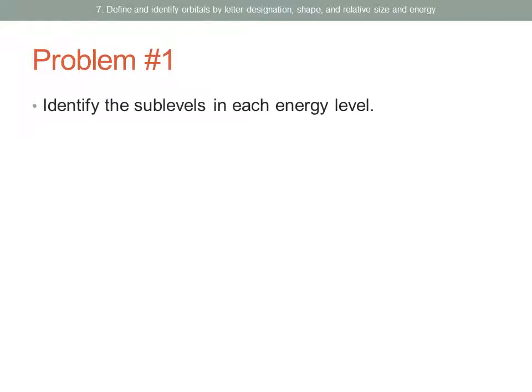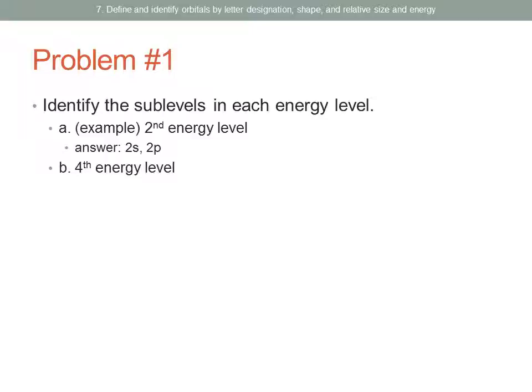The first problem: we are asked to identify the sublevels in each energy level. For example, if we are asked to identify the sublevels in the second energy level, we would know that because it is the second energy level there are two sublevels, and we would label them 2S and 2P. For the fourth energy level, there will be four sublevels: 4S, 4P, 4D, and 4F.